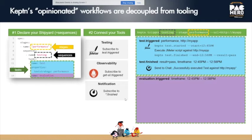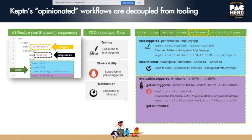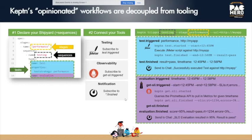Once tests are finished, Keptn moves to the next task: evaluation. This is where quality gates come in, handled by our Lighthouse service, which registers itself for the 'evaluation.triggered' event. It reaches out to your monitoring tool — could be Prometheus — and says: give me SLIs (service level indicators) for a particular time frame. Once the tool, whether Prometheus, Dynatrace, New Relic, AppDynamics, or Datadog, sends back the metrics, the Lighthouse finishes its evaluation, analyzes all SLIs against SLOs.